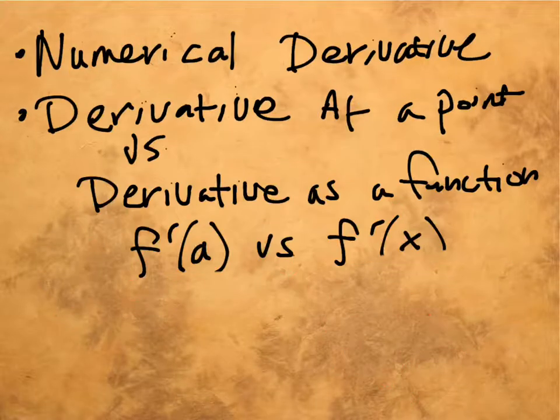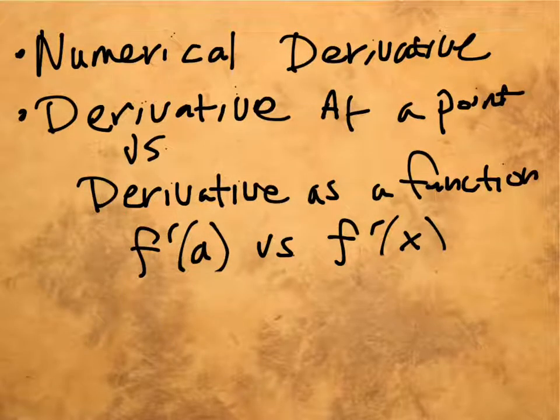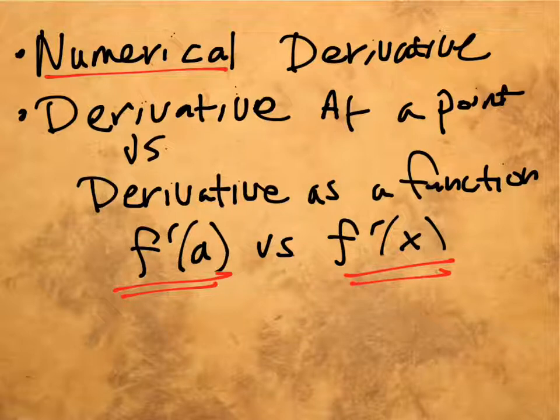Some observations. This is sometimes called the alternative form of derivative or the numerical derivative. Both of these are interchangeable because this will give you a number answer as opposed to an algebraic answer. For that reason we also call it the derivative at a point, f prime of some number a, as opposed to f prime of x, the derivative as a function.